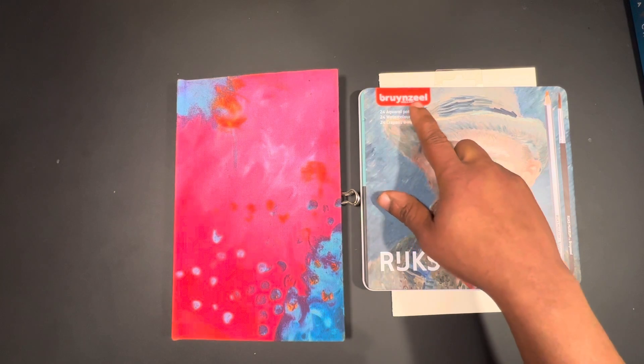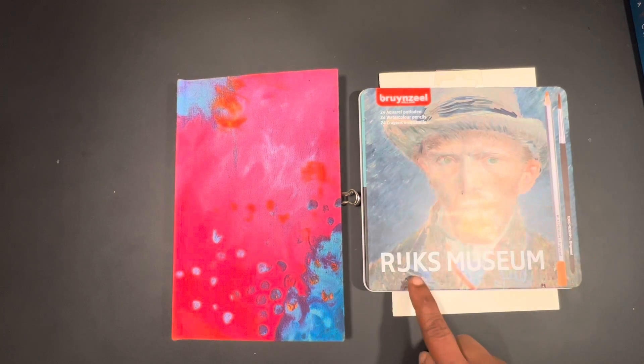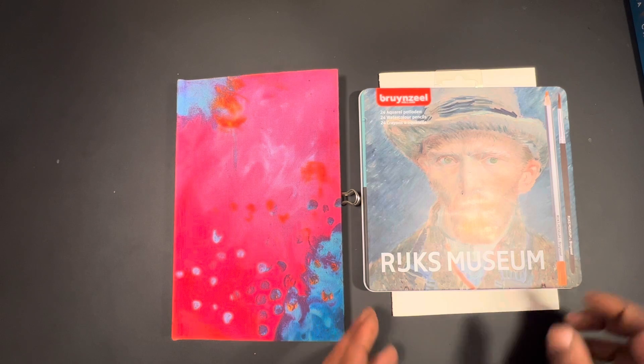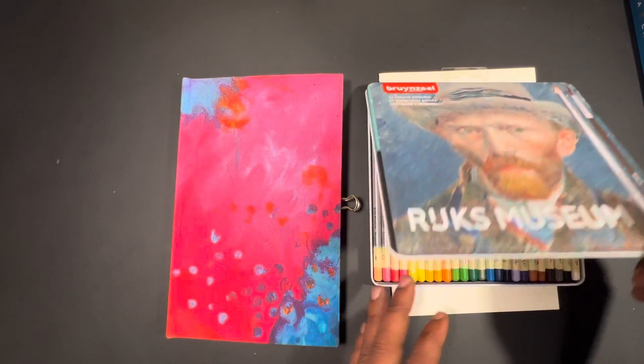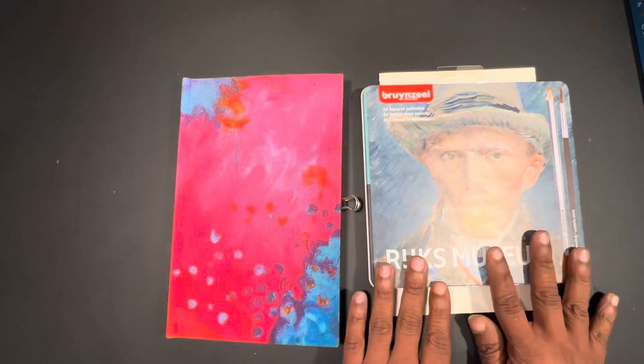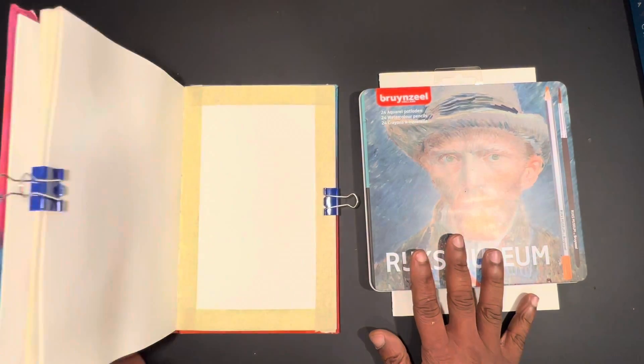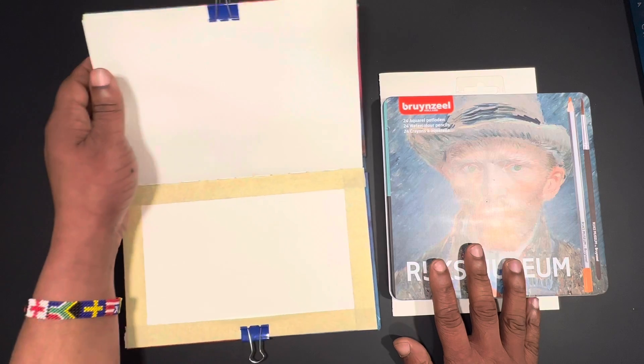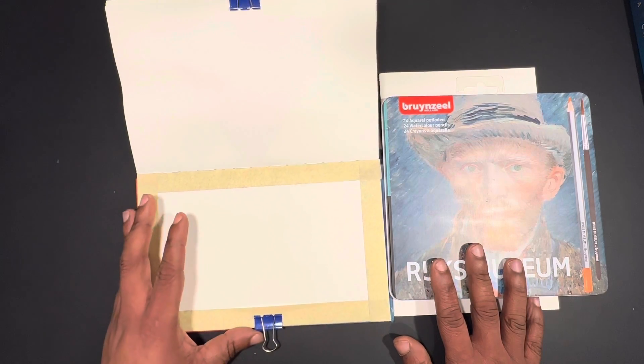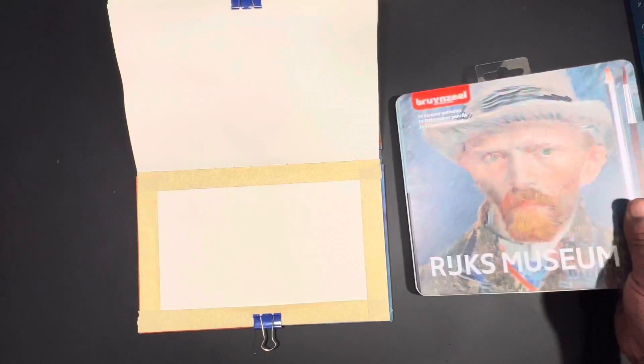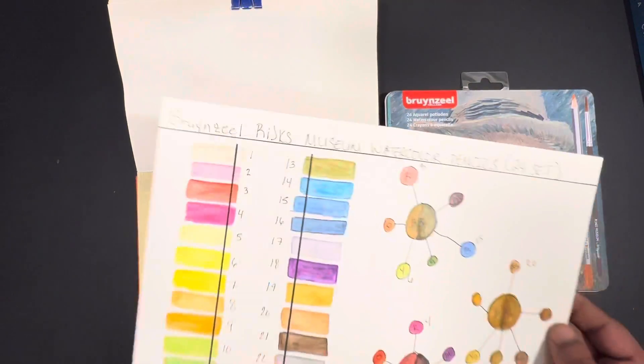For Brunseel Holland Rijksmuseum collection of watercolor pencils, there are 24 of them, and we are going to be using these on mixed media paper for this particular video. I did go ahead and do some swatching for the pencils.